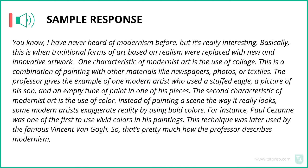I have never heard of modernism before, but it's really interesting. Basically, this is when traditional forms of art based on realism were replaced with new and innovative artwork. One characteristic of modernist art is the use of collage — a combination of painting with other materials like newspapers, photos, or textiles. The professor gives the example of one modern artist who used a stuffed eagle, a picture of his son, and an empty tube of paint in one of his pieces. The second characteristic of modern art is the use of color. Instead of painting a scene the way it really looks, some modern artists exaggerate reality by using bold colors. Paul Cezanne was one of the first to use vivid colors in his paintings, and this technique was later used by the famous Vincent van Gogh.